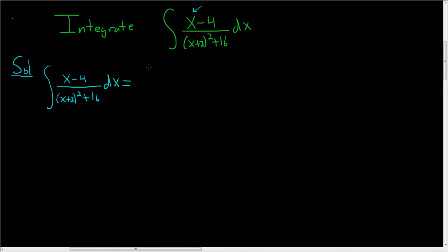So if we write this as (x+2)/((x+2)²+16) dx minus 6/((x+2)²+16) dx, we can get it to work.